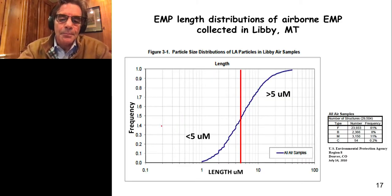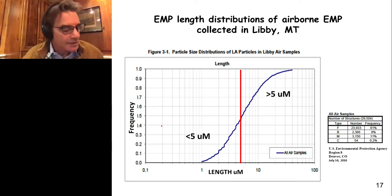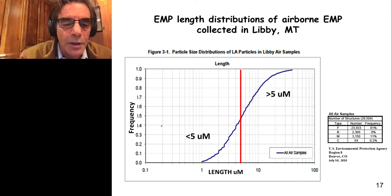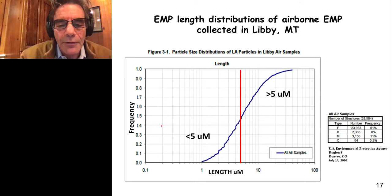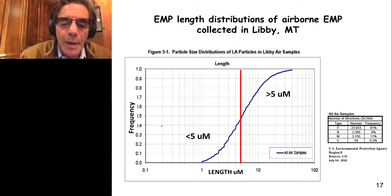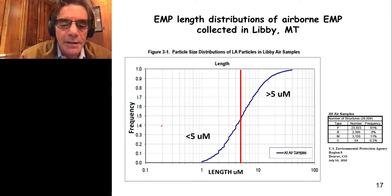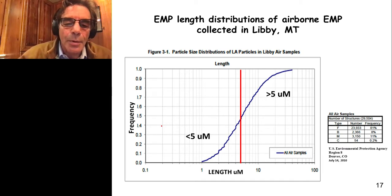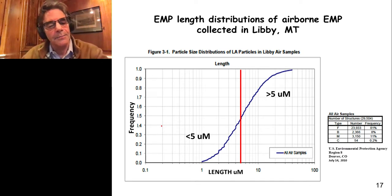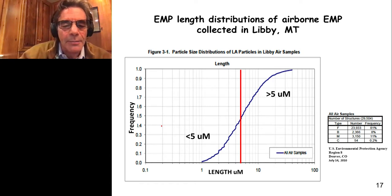This graph shows a cumulative frequency distribution of the sizes of particles we collected in Libby, Montana. After the early stages of our investigation, we knew that most of the particles we were seeing were less than five microns. The red line indicates EPA's regulatory limit — EPA regulates everything to the right but does not regulate anything to the left based upon the length of the elongate mineral particle. We think this is problematic because, as I showed you, even fibers as short as two microns can activate the inflammasome.